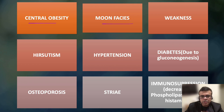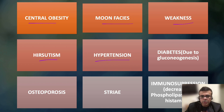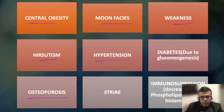Important clinical features include central obesity, moon face — a rounding of the face — weakness, and androgenic abnormal hair growth patterns called hirsutism. Hypertension is seen due to increased cortisol levels. Diabetes is seen due to increased gluconeogenesis under the influence of cortisol. Hypercortisolism also causes bone breakdown.